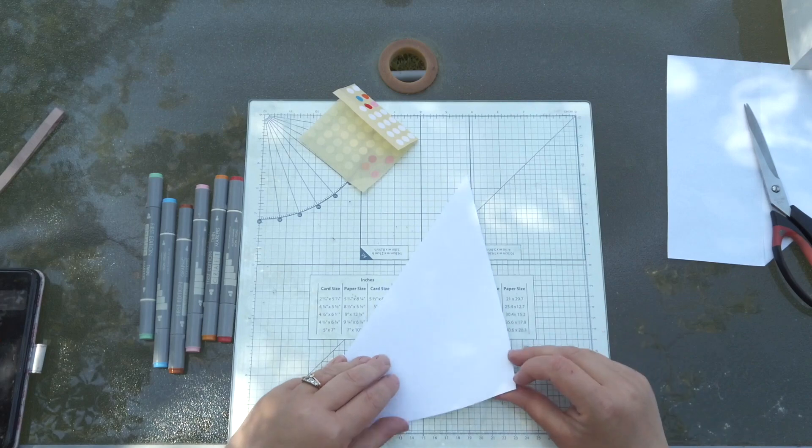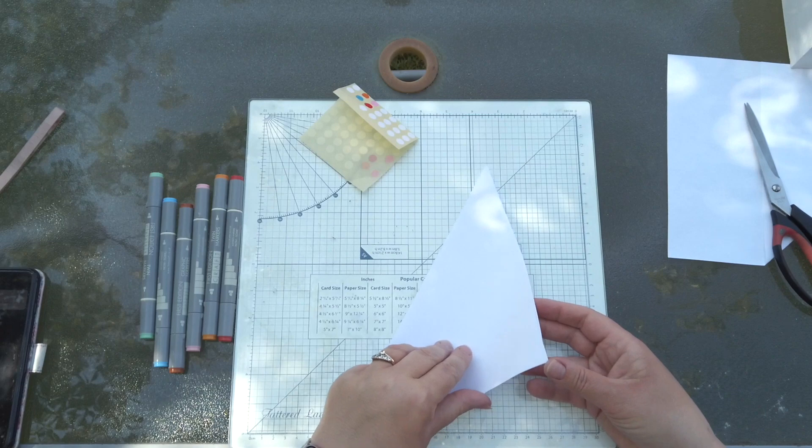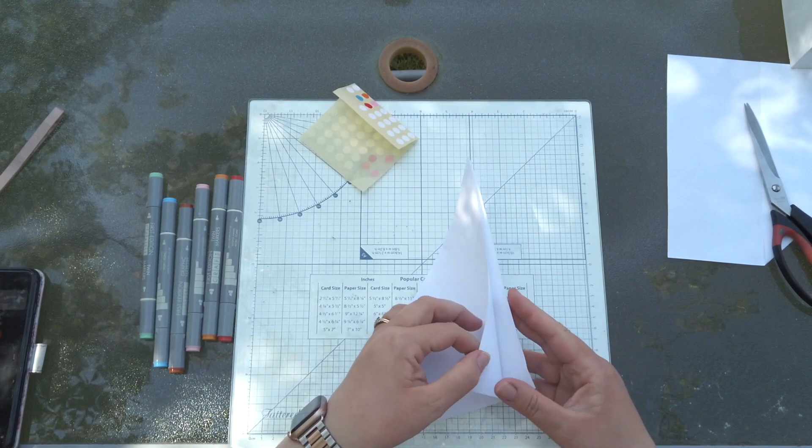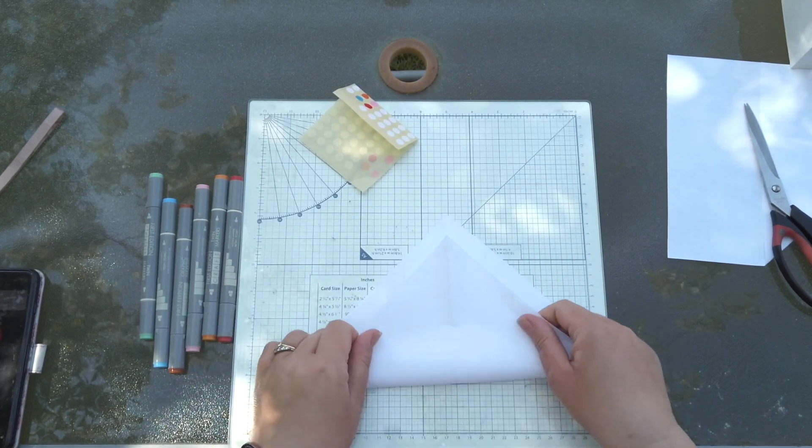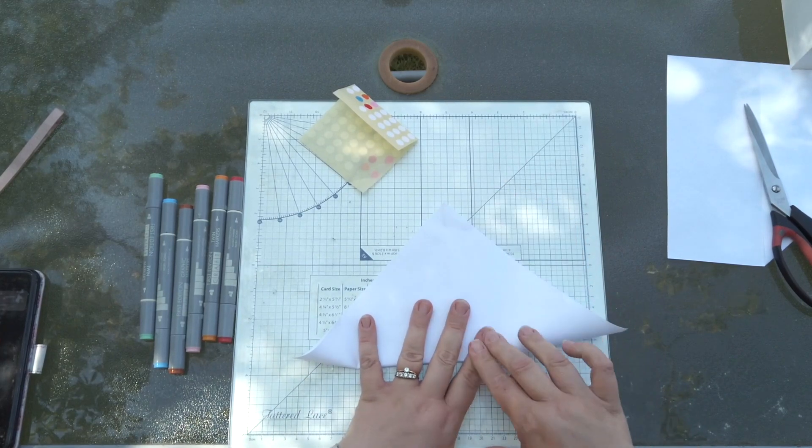I'm also going to use colored paper but it's probably easier for you if I use white so you can see what I'm doing. And then you've got a triangle there. Open it up again and go corner to corner this way and make another triangle.